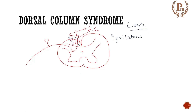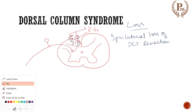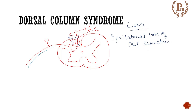With a unilateral lesion, there will be ipsilateral loss of dorsal column tract sensations — for example, fine touch, two-point discrimination, tactile localization, proprioception, and vibration. Now how about the anterior lateral system? Let me draw the anterior lateral system and think about what will happen to it.